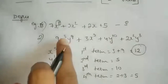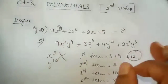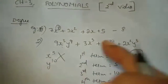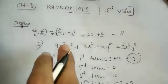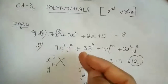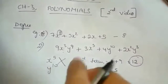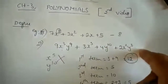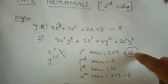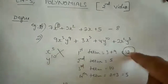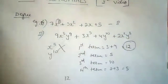So the degree of this polynomial will be 12. If they ask you to find the degree in a polynomial with more than one variable, you have to see each term's co-variables — if you have two or three variables — add those powers, and see in which term the sum is highest. The values here are 5, 10, 5, and 12. So 12 is the highest — that is the degree.